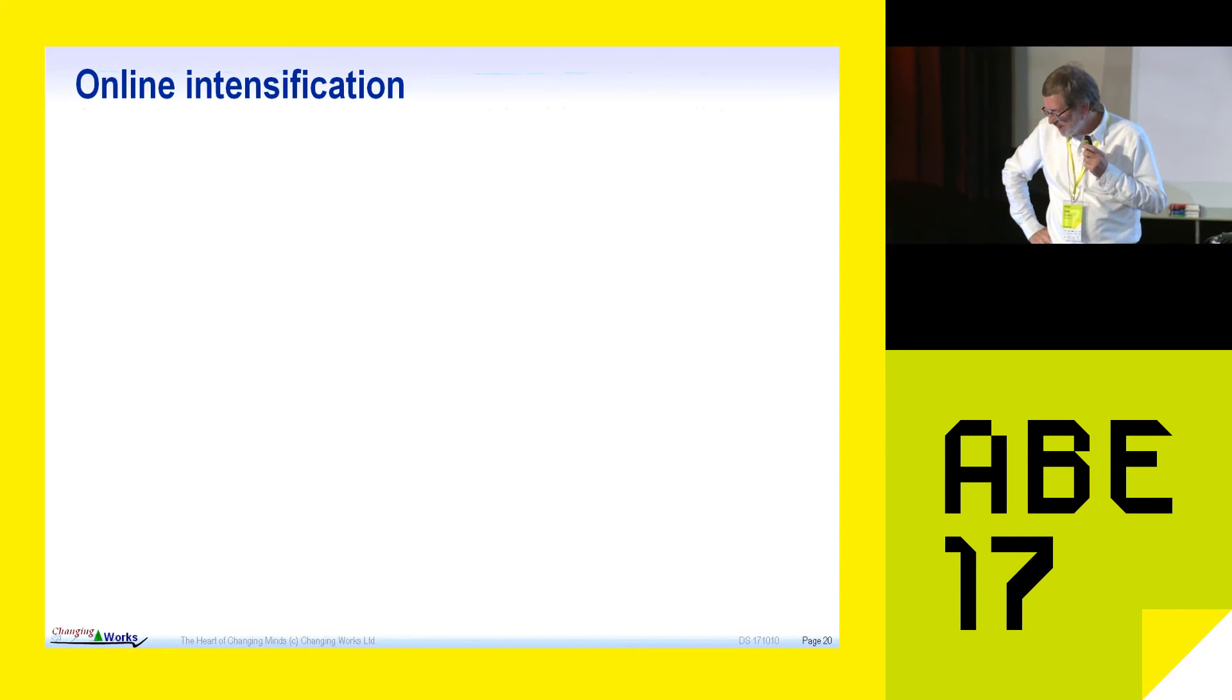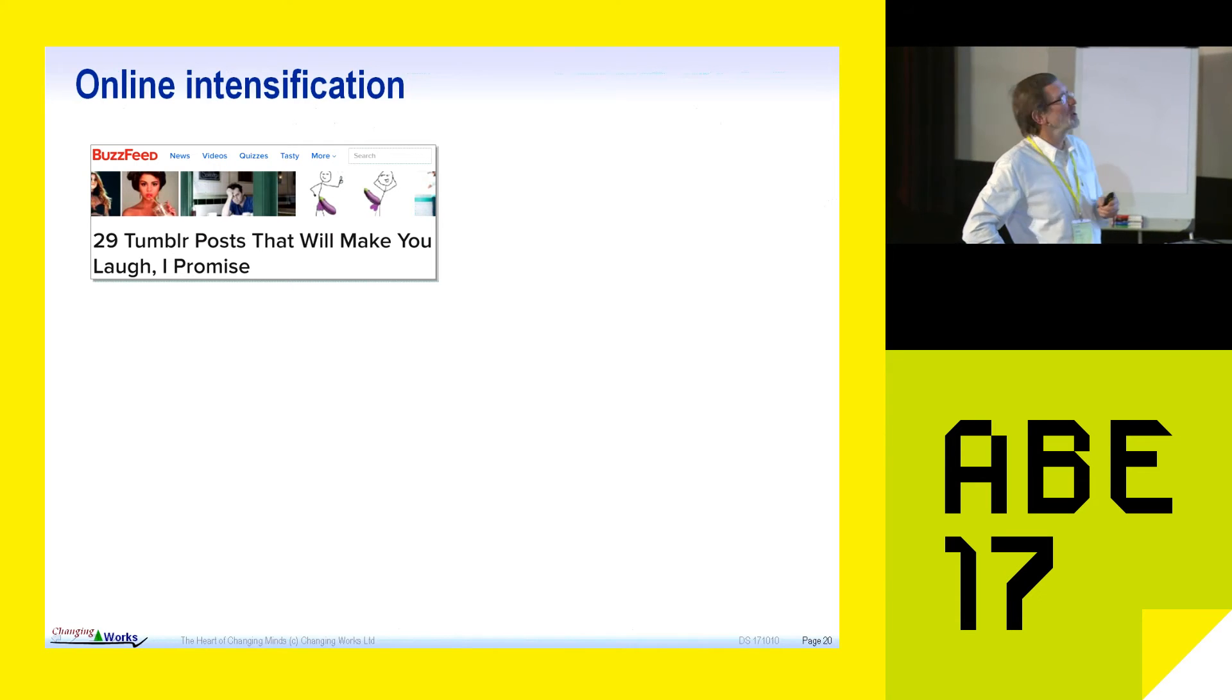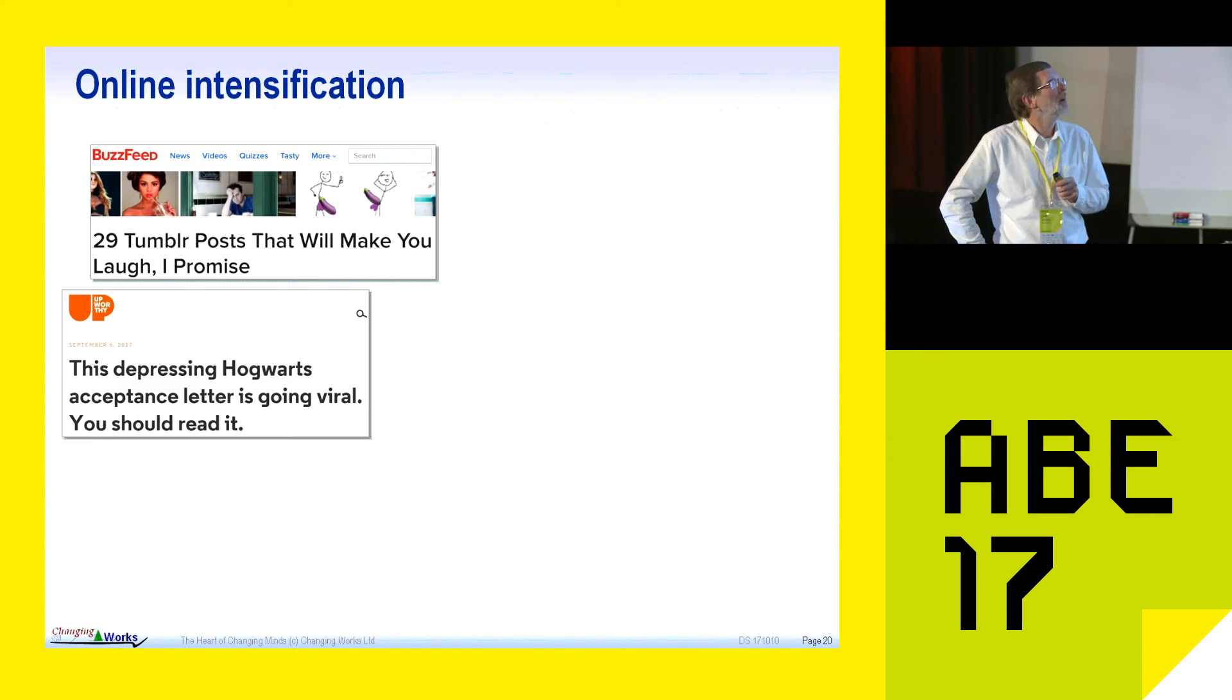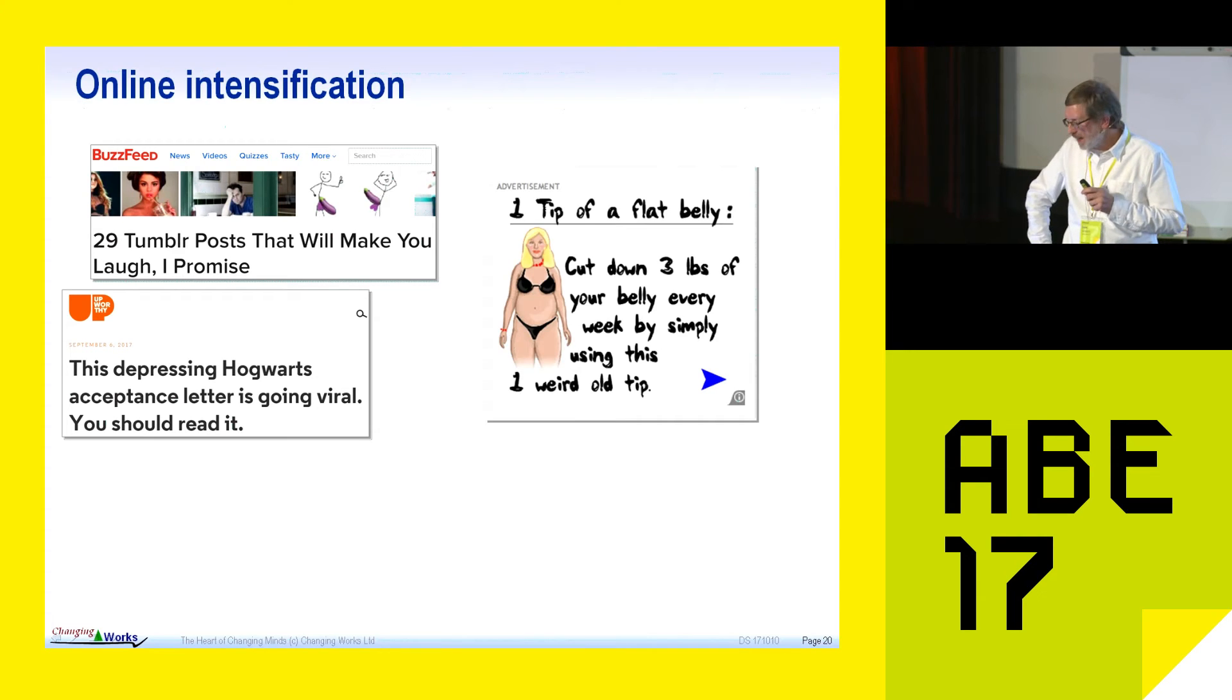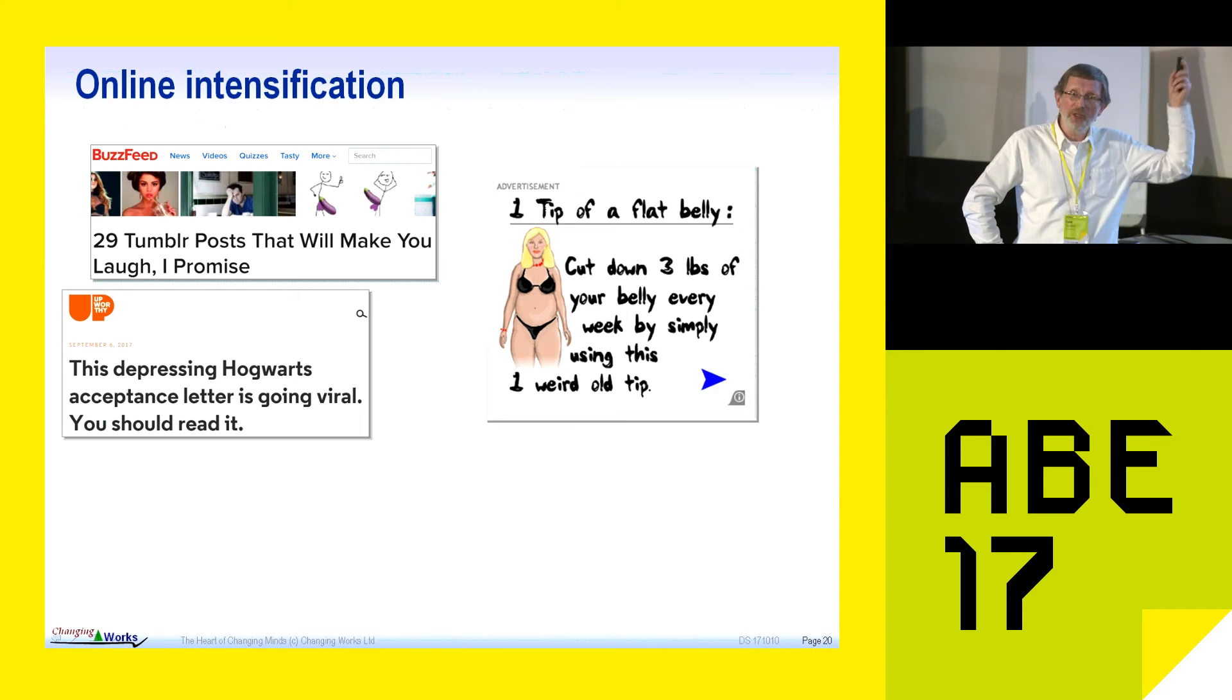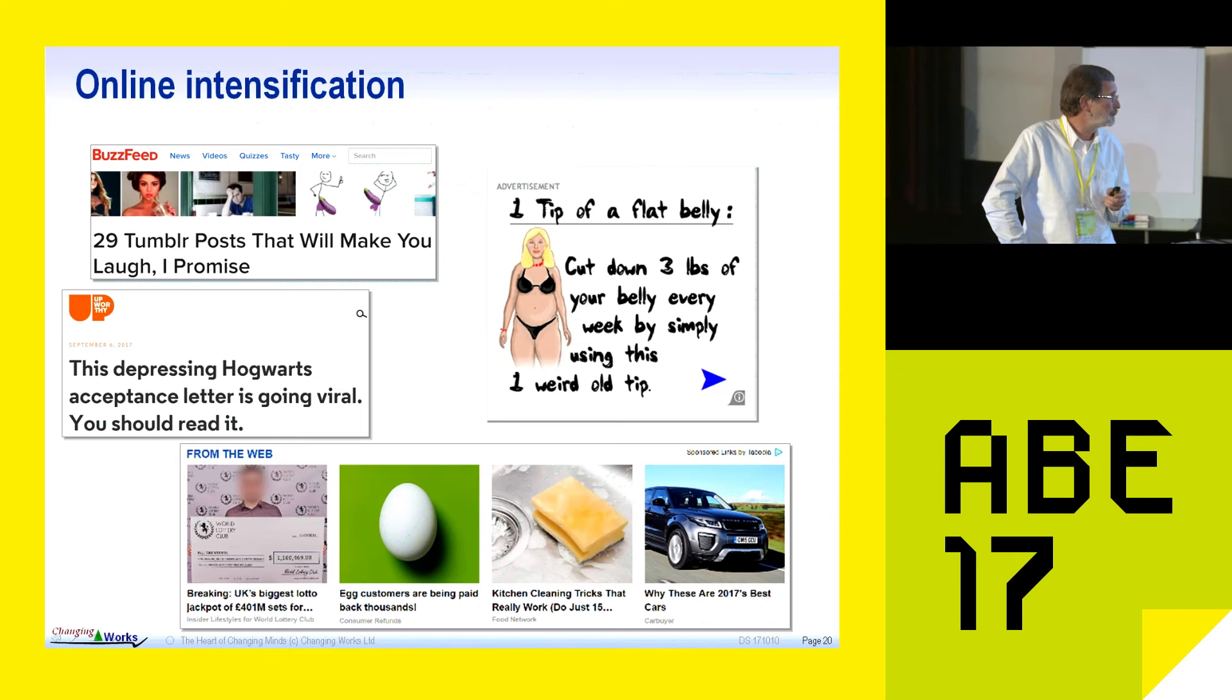So, where do we see this? Online? Clickbait. Have you noticed clickbait? How it makes you feel? It is designed to build tension in you. So, think of these things here. The 29. Why 29? Because it stands out. It's authoritative. Sounds like you've done your research. You know, make you laugh. Authority. I promise. Building trust. Another one from Upworthy. Depressing Hogwarts letter. Something that's going to attract attention. You should read it. Authority. This one, weird old tip. This has been around for quite a while. But it's designed and it's deliberately intended to play on, you know, body image and so on. I certainly don't endorse it, but it's used. This is just a typical one that happens all the time. This one was from a national daily newspapers website. It looks like news. And it just goes underneath, but it's full of clickbait.